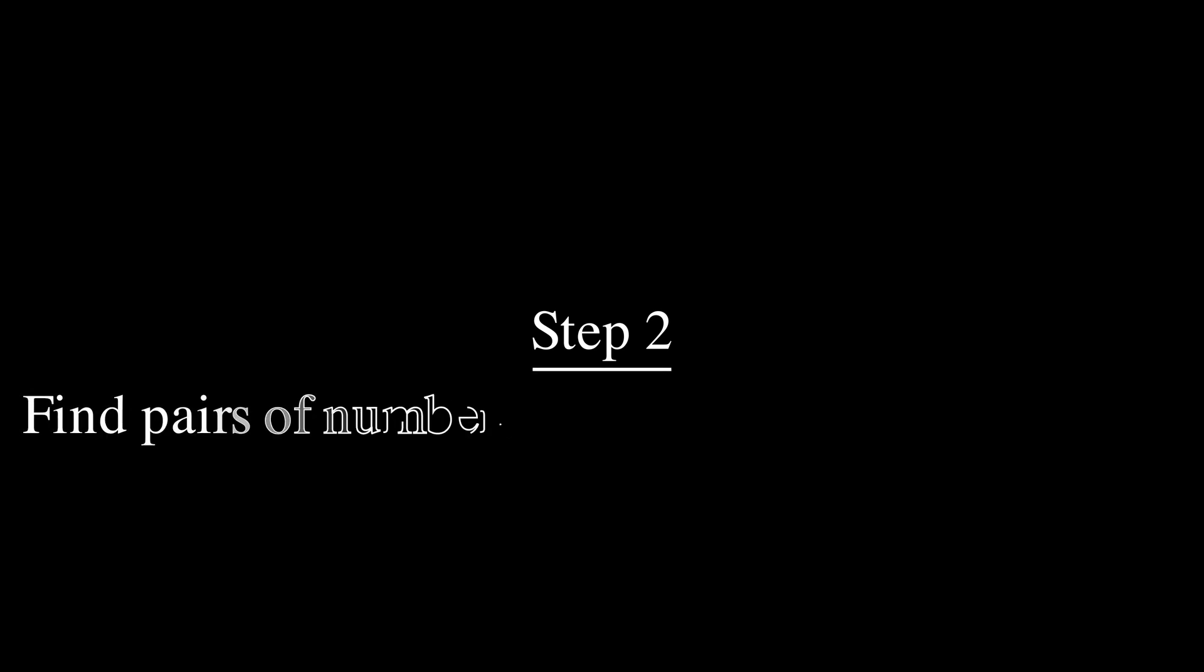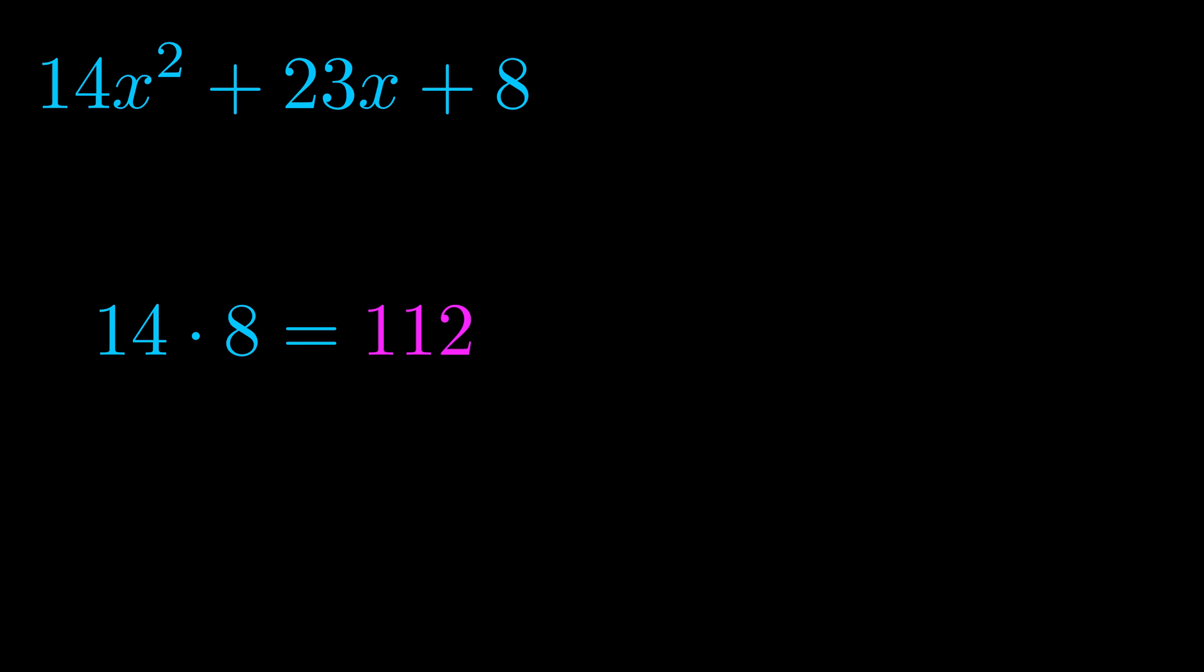Step two is to try to find all of the pairs which multiply to this number. Now it turns out you don't really need to find all of them, but go ahead and write down as many numbers as you can that multiply to the magenta value for now. Pause the video and resume when you're ready to continue.